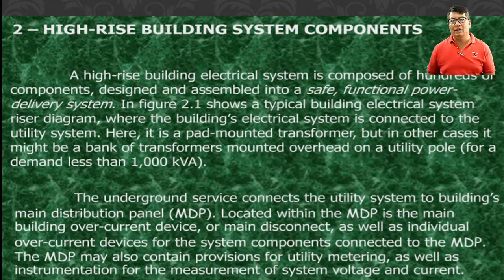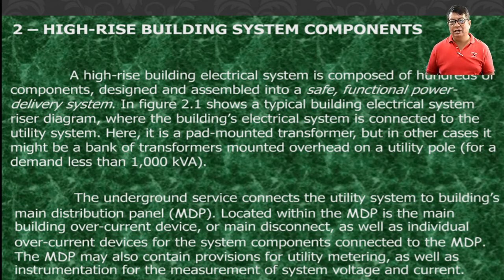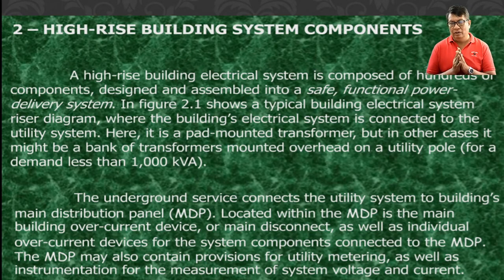Number two, we discuss high-rise building system components. The high-rise building electrical system is composed of hundreds of components designed and assembled into a safe functional power delivery system. In Figure 2.1, we see a typical building electrical system riser diagram, where the building's electrical system is connected to the utility system — the distribution utility, similar to local electric cooperatives.